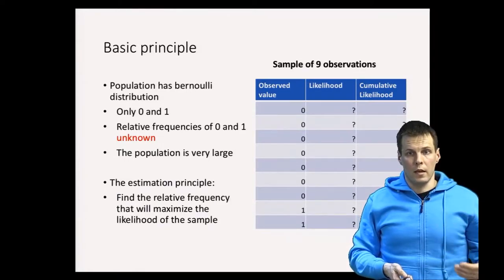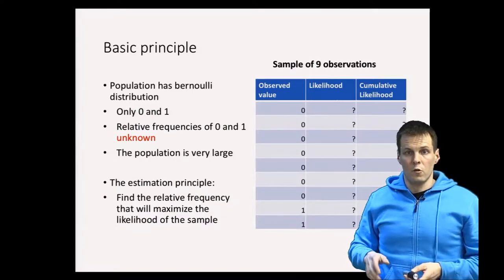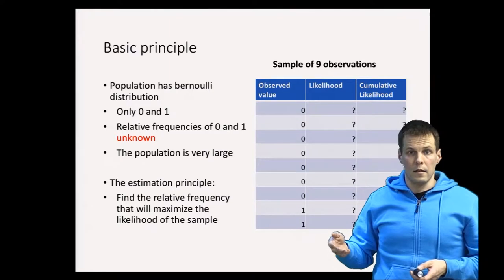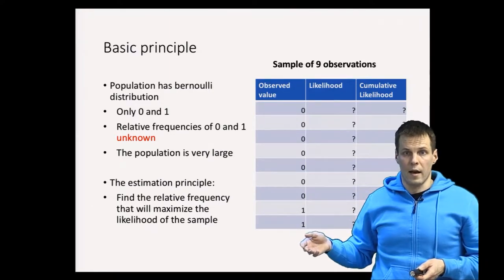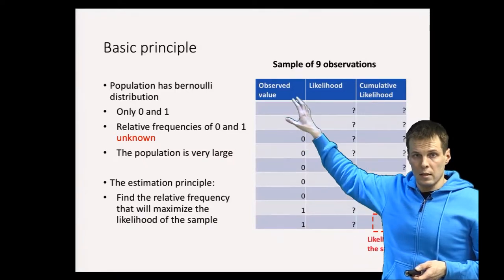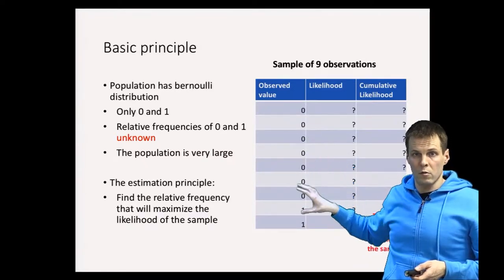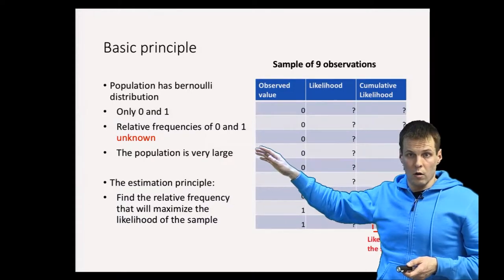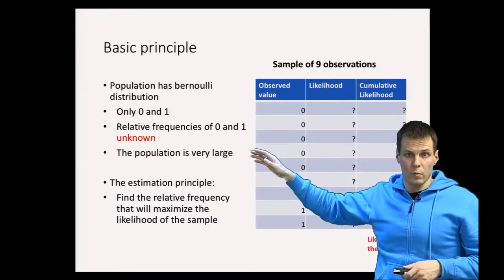The idea of maximum likelihood estimation is that we try to find a population that has the maximum likelihood of having produced these values. We don't know what the mean is or what's the ratio of ones and zeros. We only know the data, and we assume that the model exists for the population.